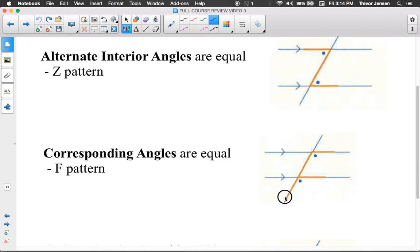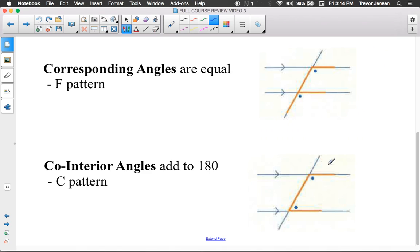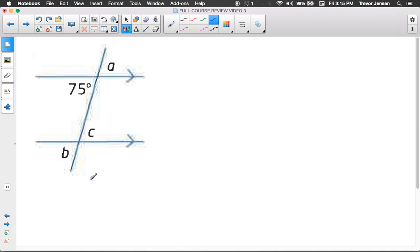Also, there's the f pattern. We call those corresponding angles. The corresponding angle theorem says the angles inside the f are also equal to each other. And lastly, we have the c pattern. We call those co-interior angles, and the angles inside of a c, they're not equal to each other, but they do add to 180. We can use those three theorems in combination with supplementary angles and opposite angles. Remember opposite angles, like this angle here and this angle here, are equal to each other. We can use these theorems to figure out unknown angles if we have parallel lines.